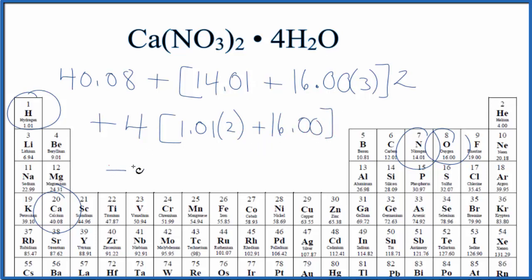We end up with a molar mass of 236.19, and the units are grams per mole. So what this means is if we have one mole of calcium nitrate tetrahydrate, it'll weigh 236.19 grams.